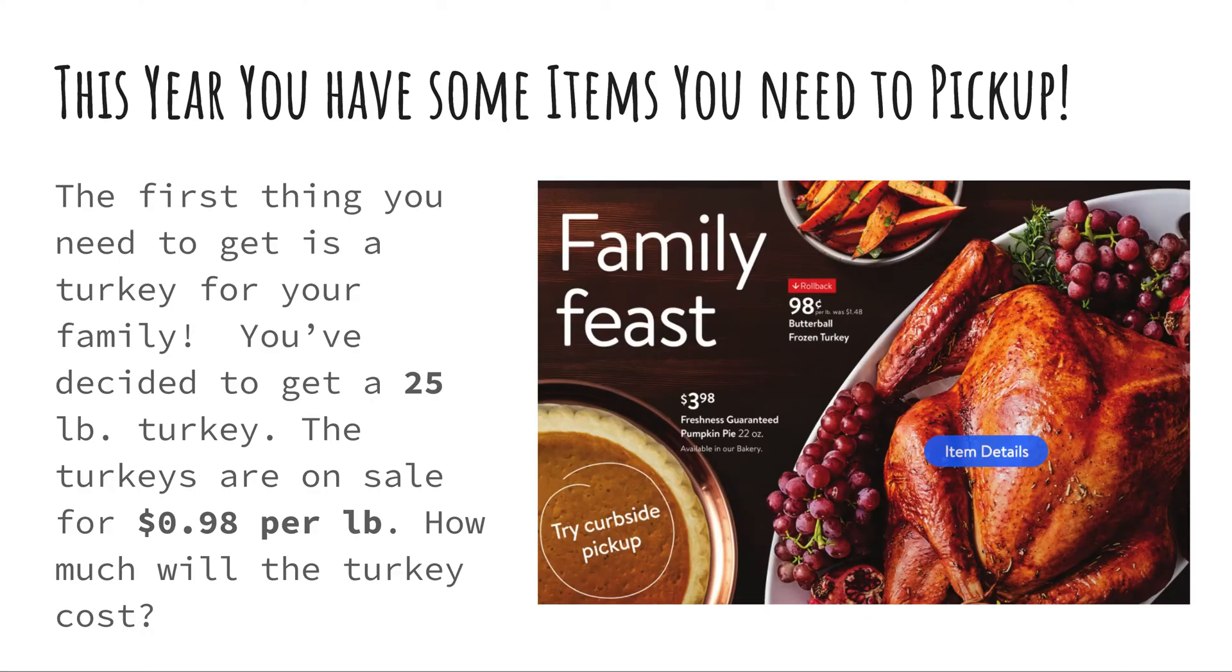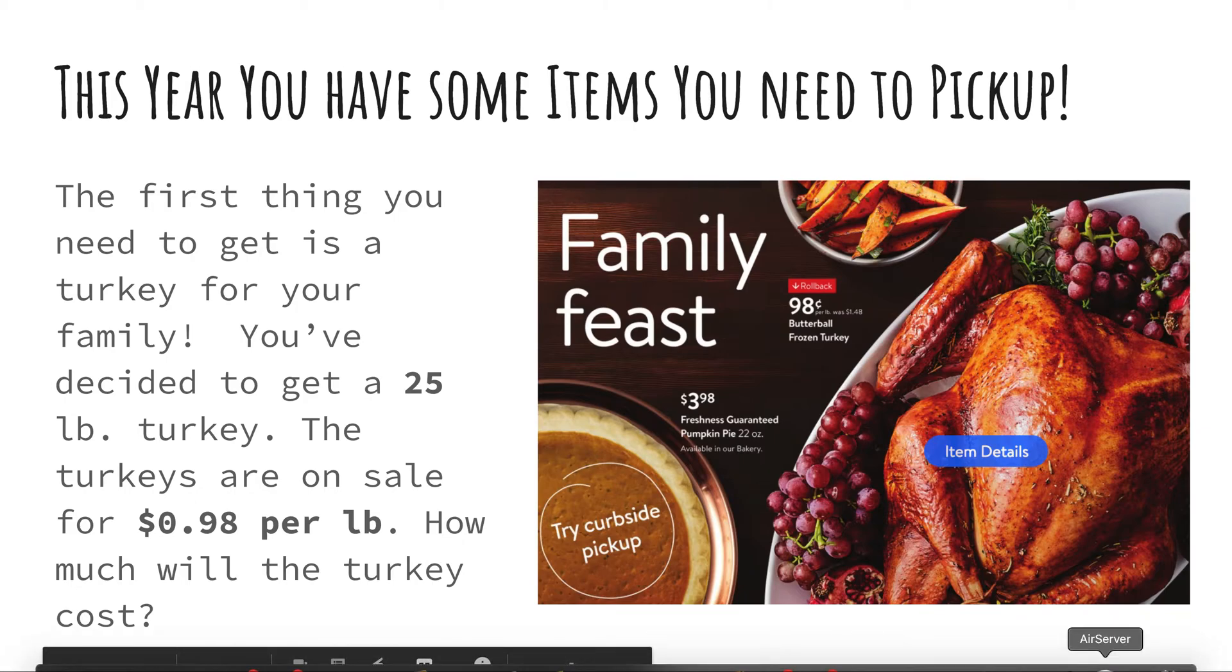So like I said, the first thing that you need to pick up for your family is a turkey. Now you've decided that you're going to get a 25 pound turkey and the turkeys are on sale for 98 cents per pound. Now notice there's that key clue word per, meaning that you would multiply or divide. Because we know that the price is going to not go lower than 98 cents, it's going to go much farther up. That's our signal that we need to multiply here. So go ahead and do that now. Take 25 times 98 cents and let's see what you guys get.